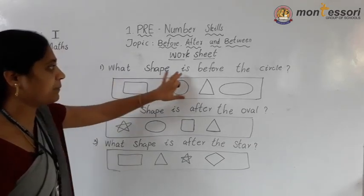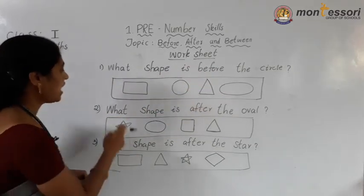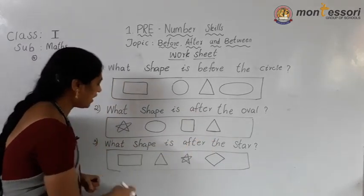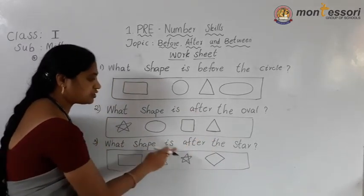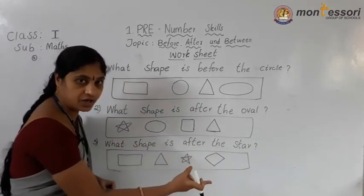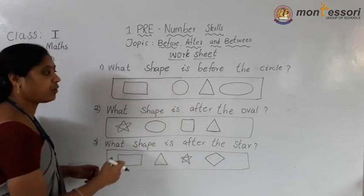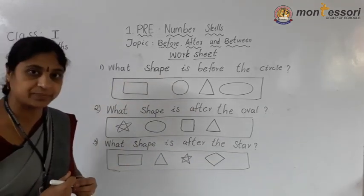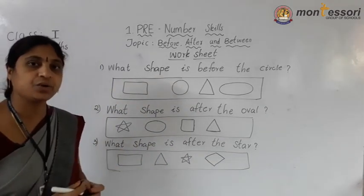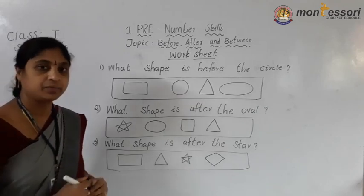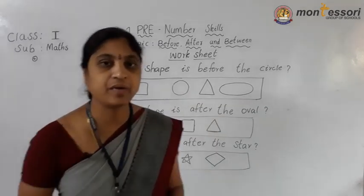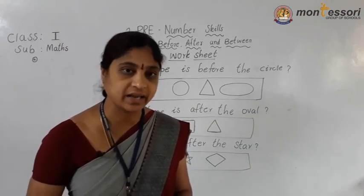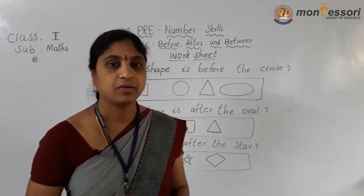What shape is before the circle? What shape is after the oval? And what shape is after the star? This is your homework. Write neatly and draw the shapes. Send it to your class teacher. Today I am going to wind up the class. We will meet next class with another topic. Okay, bye bye.